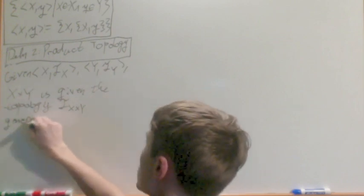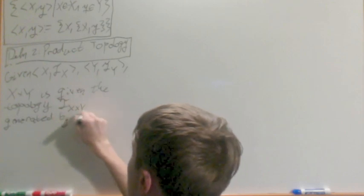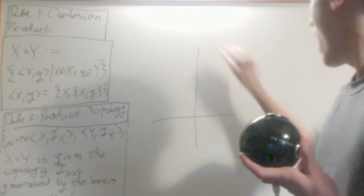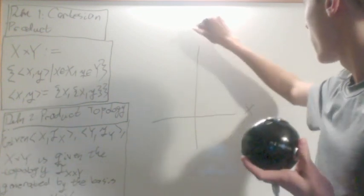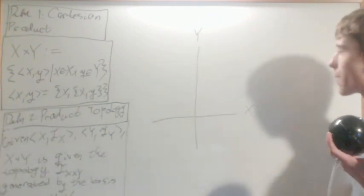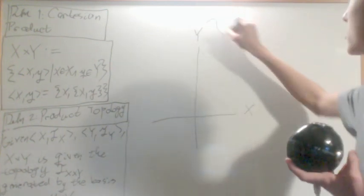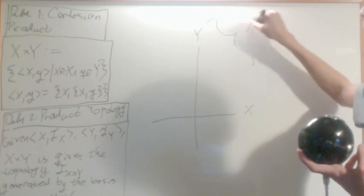It's generated by the basis. If I have X right here, Y right here, and then these are all the pairs of points, X, Y is going to be the plane. This is the Cartesian product.